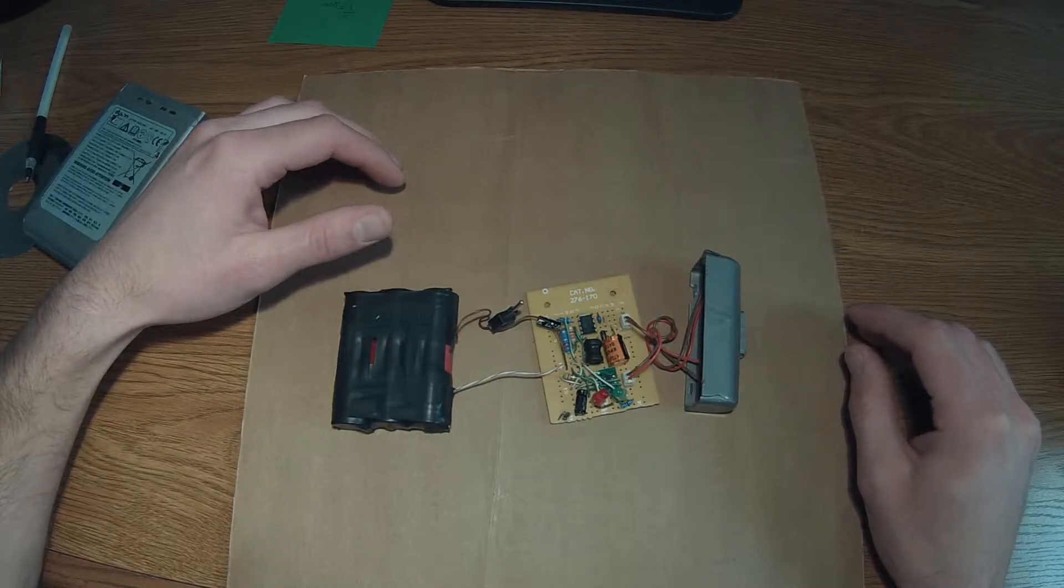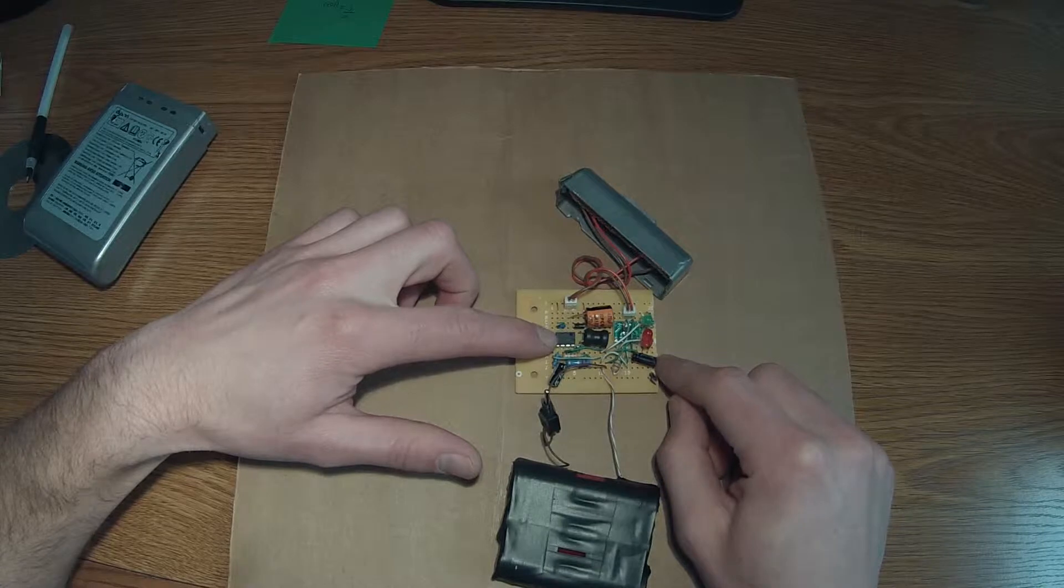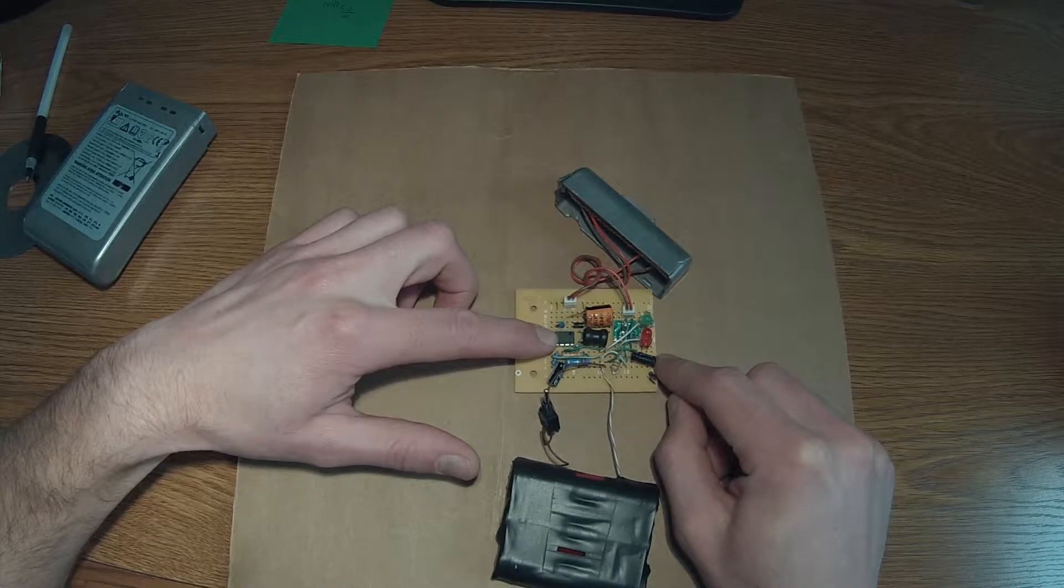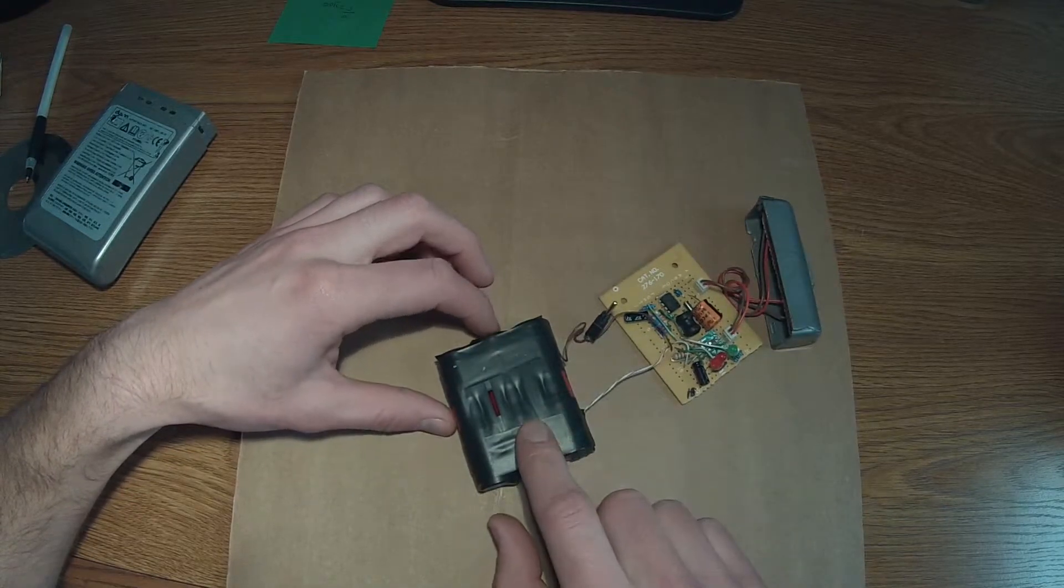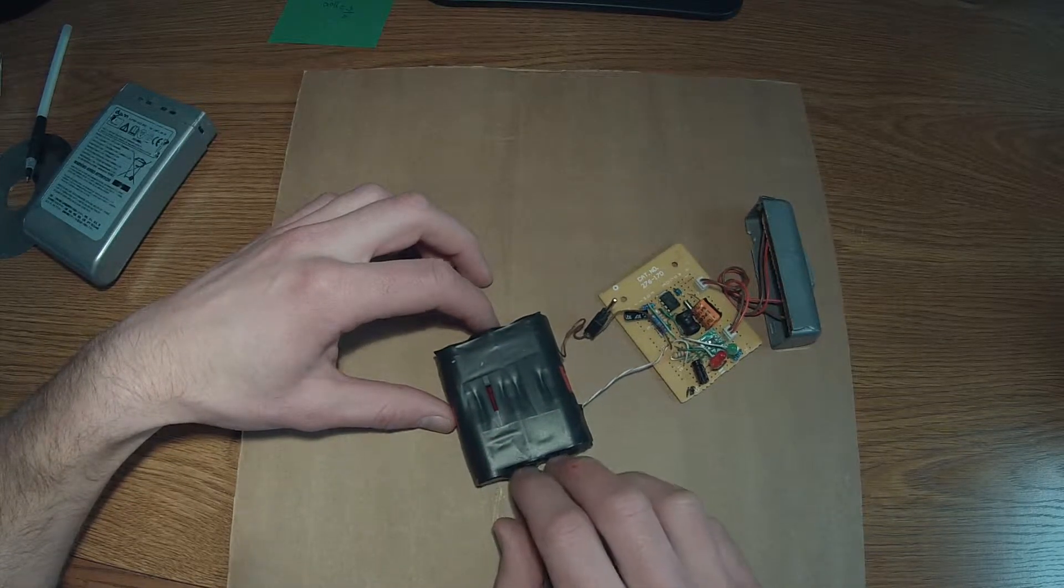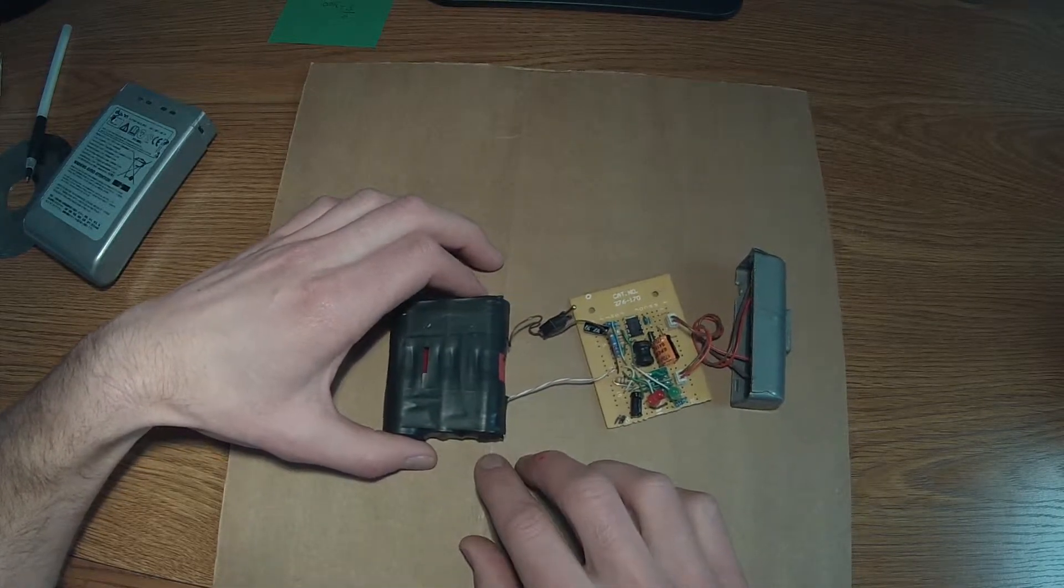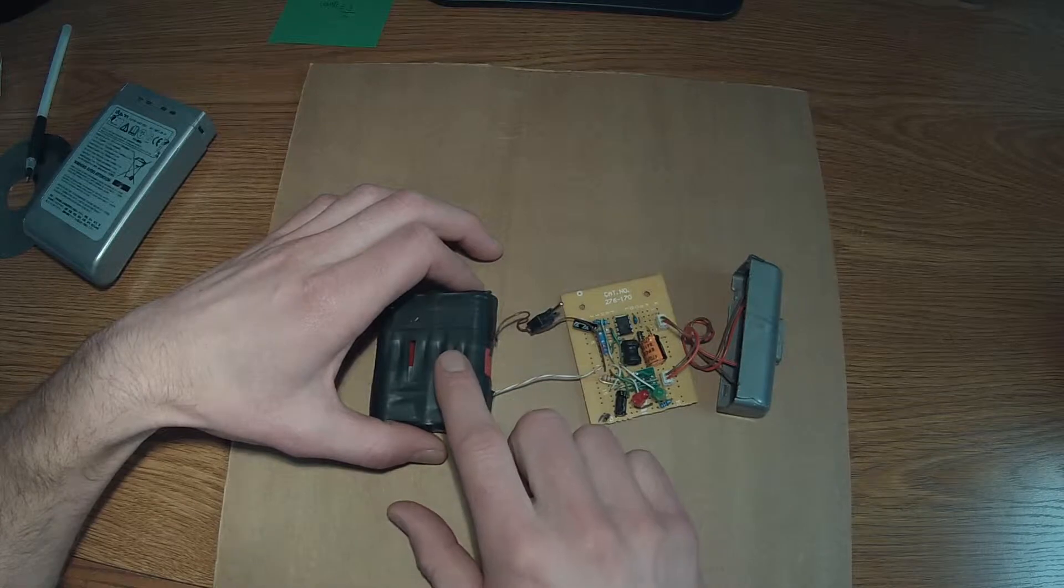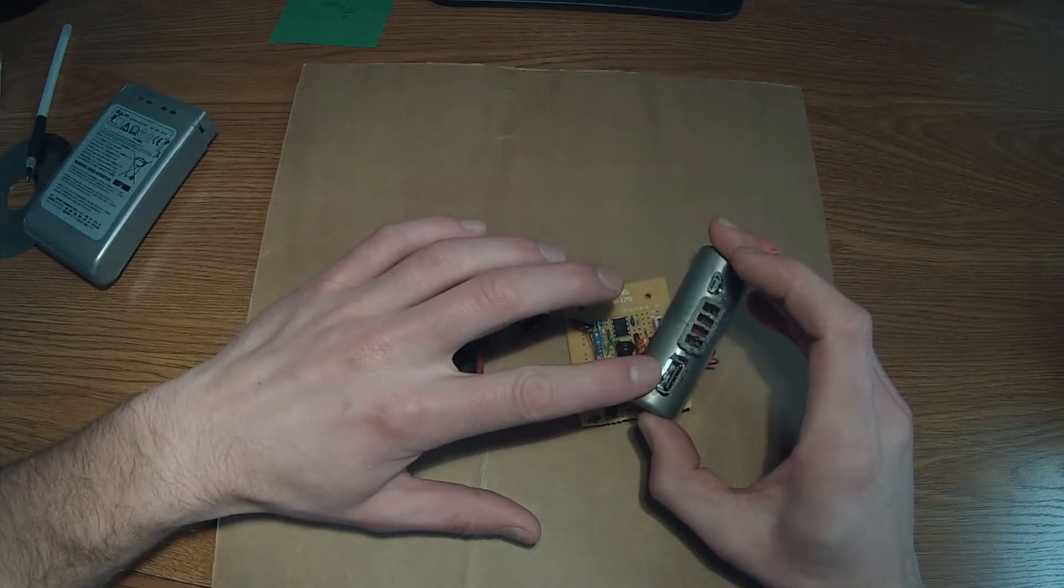So, in this one I'm using the MC34063 voltage regulator and it's bringing this three cell lithium ion, all the cells are in parallel pack from about 3.7 volts to the 5 volt USB output here.